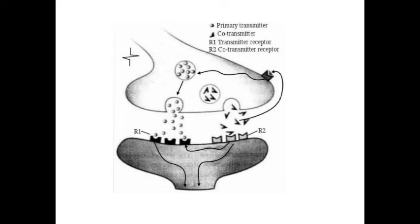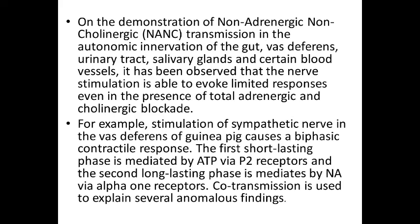This is the diagram of co-transmission. Co-transmission involves a co-transmitter and a primary transmitter. R1 is the primary transmitter receptor and R2 is the co-transmitter receptor.